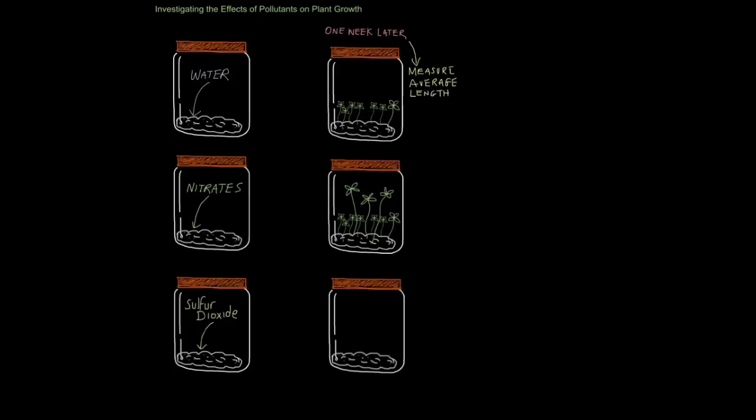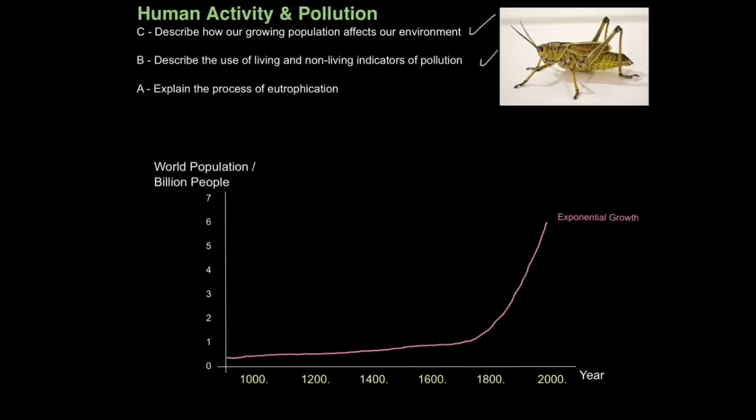So one week later, we can see that the crests have grown as you'd expect in the water sample. The one which had nitrate soaked into it, the crest has grown longer and more. And in the one which had sulfur dioxide, we see no growth. But it's important to be quantitative, in other words, have numerical data about this. So we can measure the length of the individual crest stalks or stems, and then we can find the average length and do the same for the others. And that way, we can meaningfully compare the results. And that is how you explain the process of eutrophication.